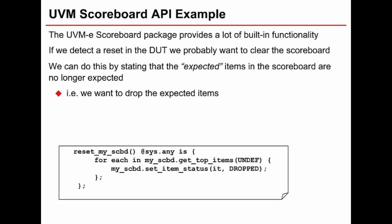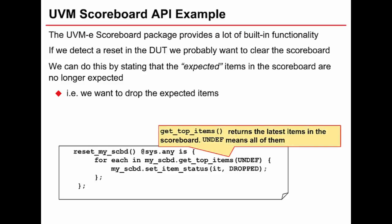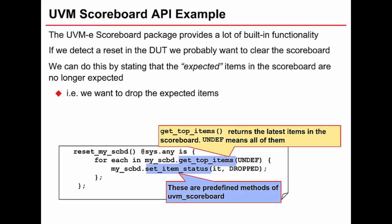We assume my_scbd is a pointer to the scoreboard we instanced. The things highlighted in blue are the API methods of the scoreboard. We call get_top_items from the scoreboard database - the parameter UNDEF means all items, though we could supply a number like five to get only the top five. We then iterate through the returned list and use the API method set_item_status to set the status to 'dropped' for every item in that list. This means we're dropping all those items from the scoreboard, effectively clearing it after a reset.